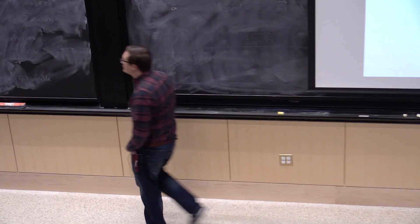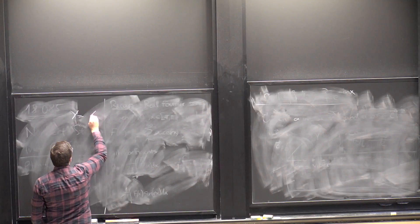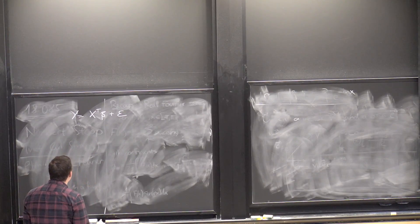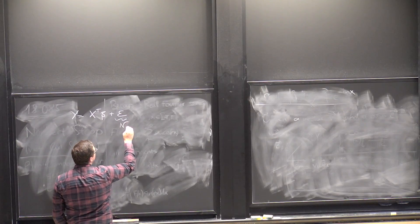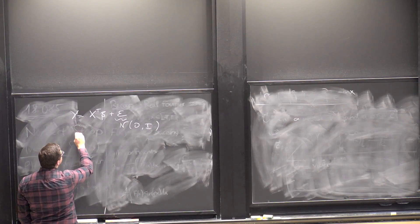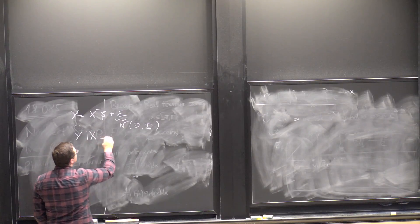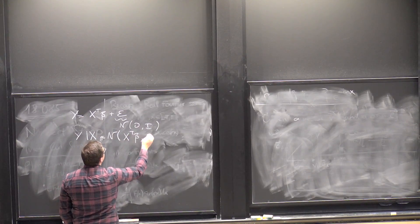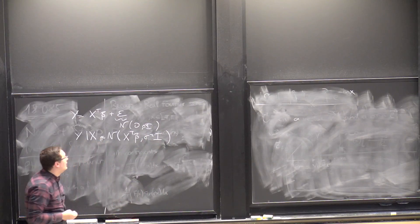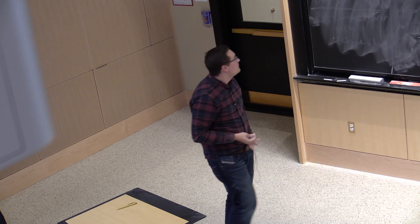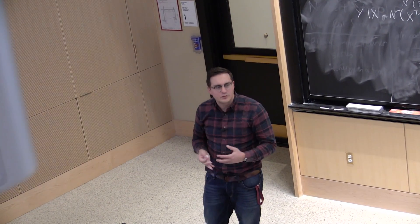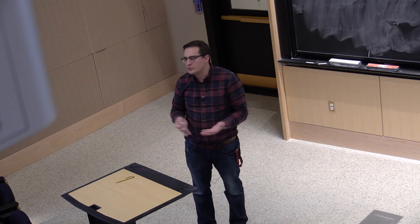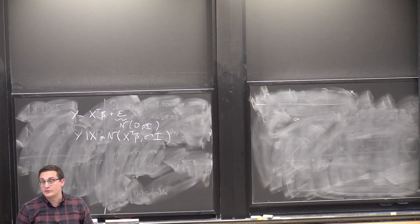The linear model looked like this: y equals x transpose beta plus epsilon. That was our linear regression model. Another way to say this is that if epsilon is Gaussian with mean 0 and identity covariance matrix, then the conditional distribution of y given x is Gaussian with mean x transpose beta and variance sigma squared. So regression is just saying I'm trying to explain y as a function of x.